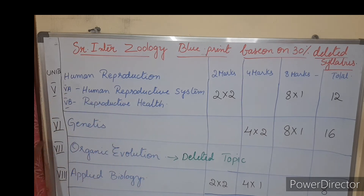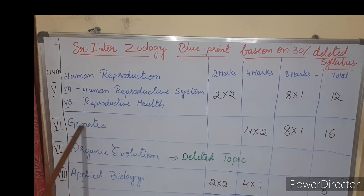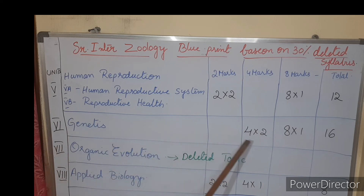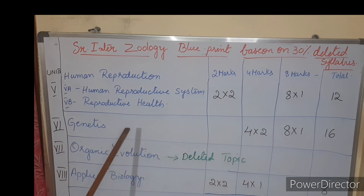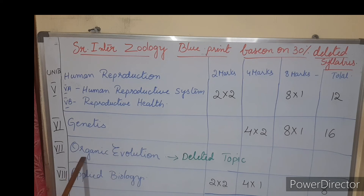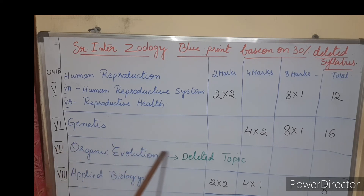Coming to Unit 6 — Genetics — we get two four-mark questions and one eight-mark question, so focus on genetics. Unit 7 — Organic Evolution — is a completely deleted topic; we won't get any questions from this chapter.